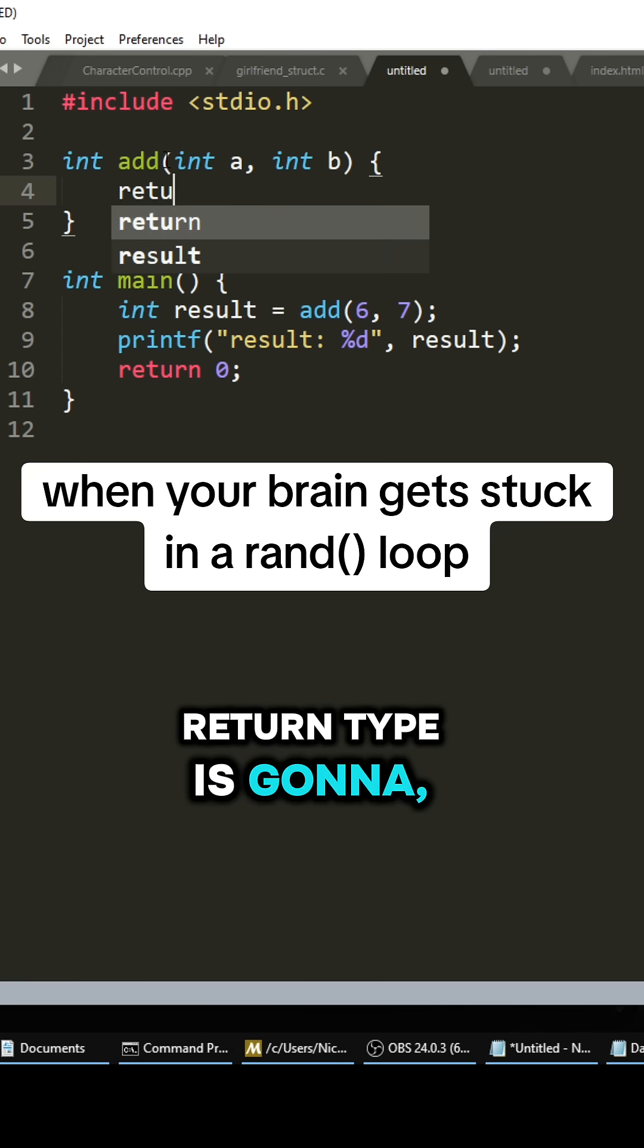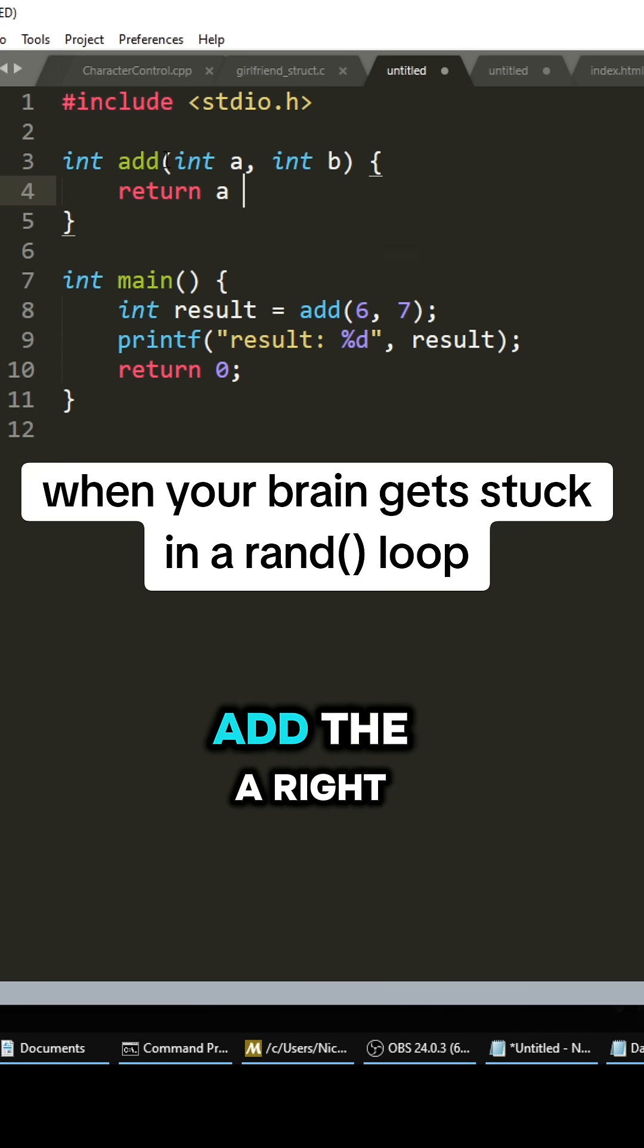And then for the return type it's going to be an int, and then we're going to add the a right here plus the b. And we're also going to make sure that we subtract the n and the i right here from the a.